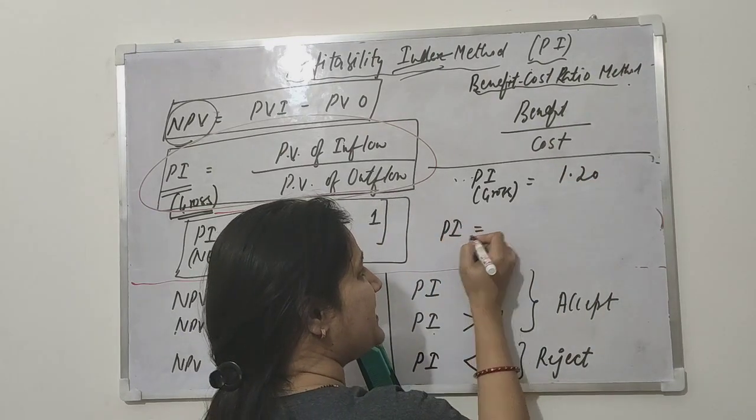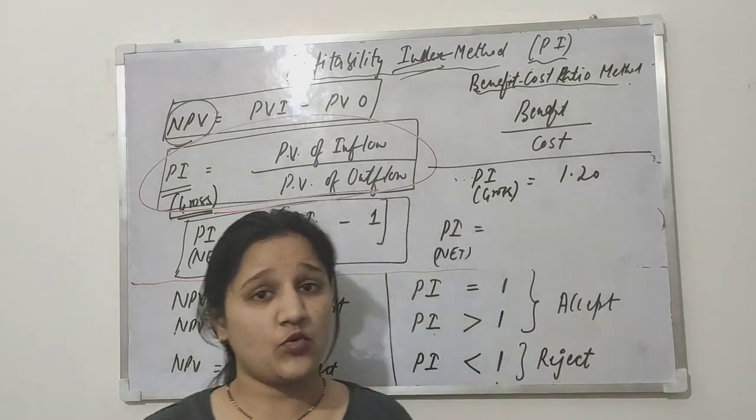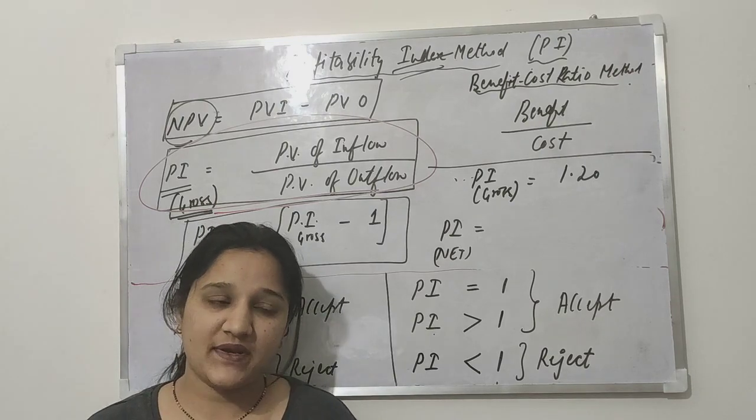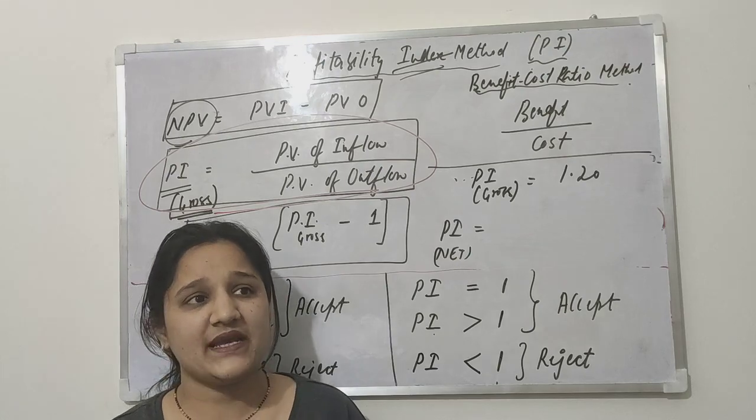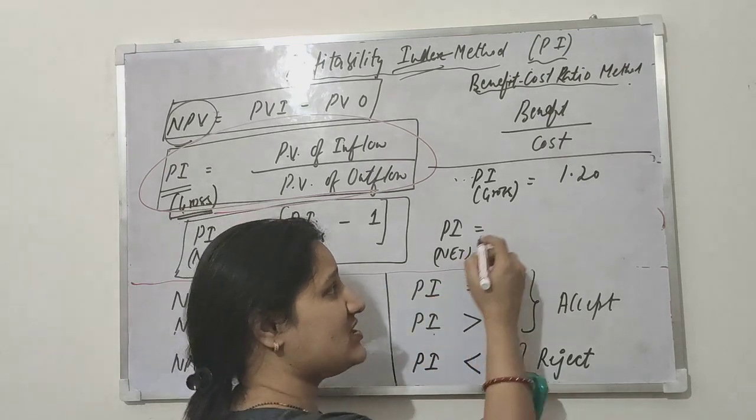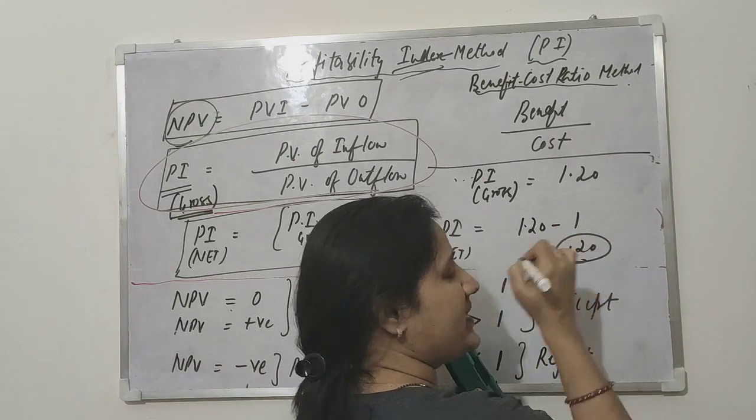If you have to calculate PI net, net means how much extra PI. Gross will tell you that in total you'll get this much - you're getting one rupee twenty paisa for investing one rupee. But we had to give one rupee which you invested. The extra you're getting, that will come out as 1.20 minus 1, that is 0.20.